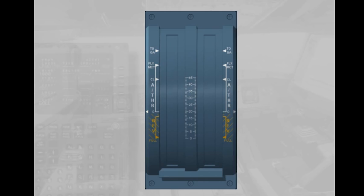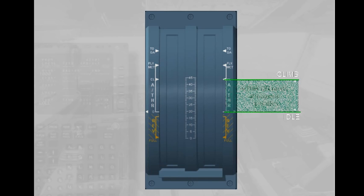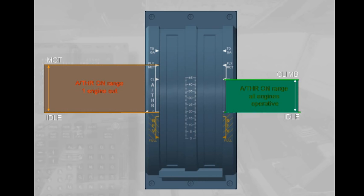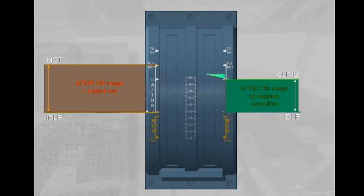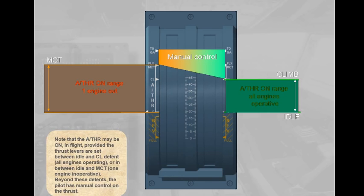Note that the autothrust may be on in flight provided the thrust levers are set between idle and climb detent with all engines operating, or between idle and MCT with one engine inoperative. Beyond these detents, the pilot has manual control on the thrust.